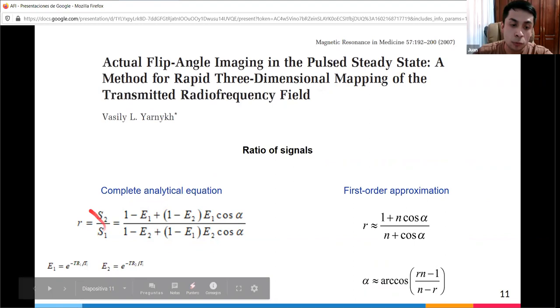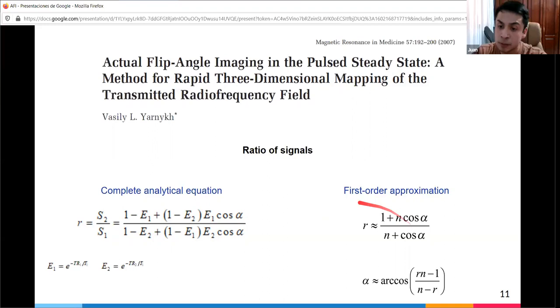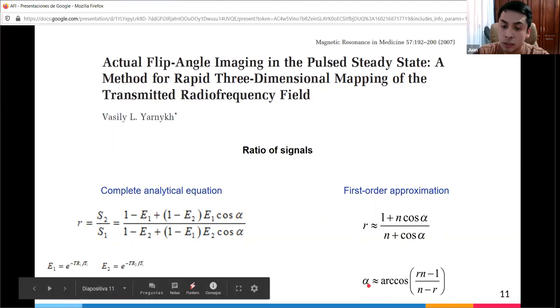To recall, the ratio r is signal 2 to signal 1. They have two versions: the complete analytical equation which seems complicated, but after applying a Taylor expansion to the exponential and keeping only first-order terms, they got this approximation. Solving for the flip angle, they obtain the distribution of flip angles as a function of the ratio of signals r and as a function of ratio n, which is the ratio of repetition times. This approximation should provide sufficient accuracy to a wide range of repetition times and relaxation times.